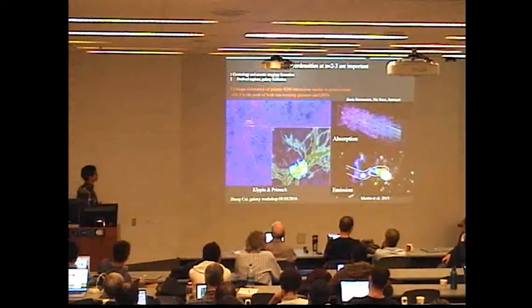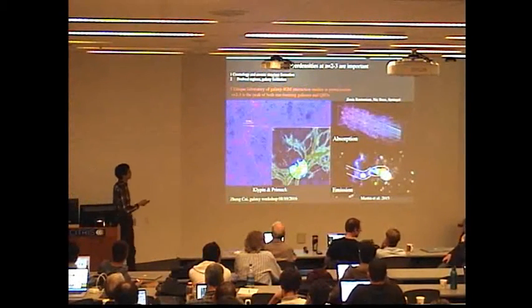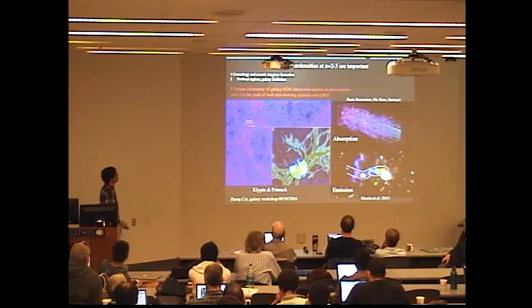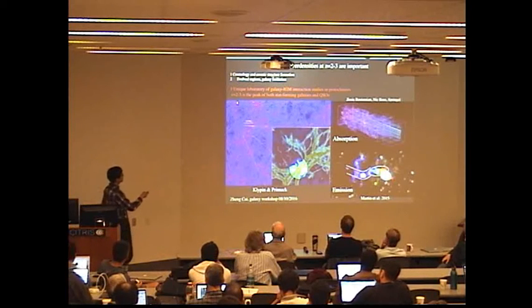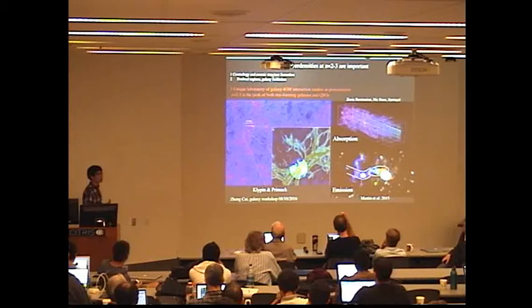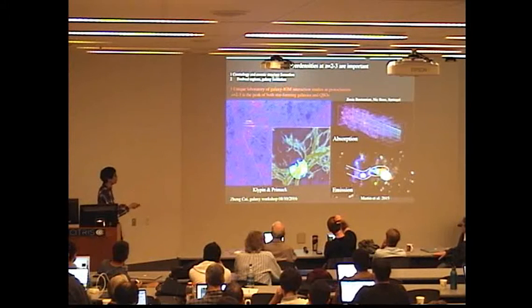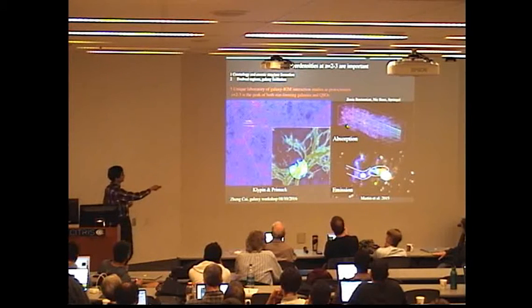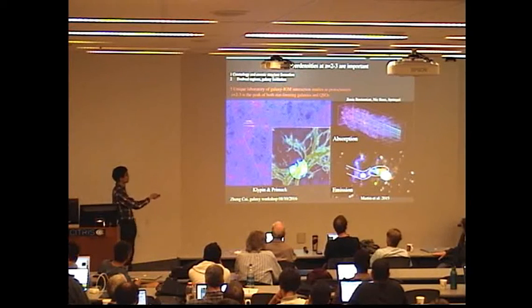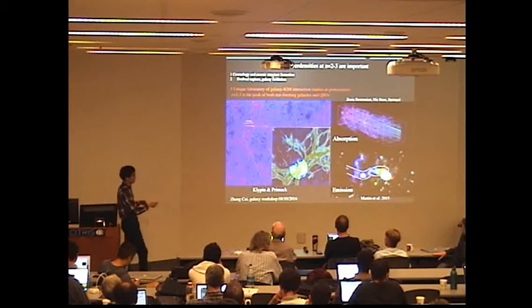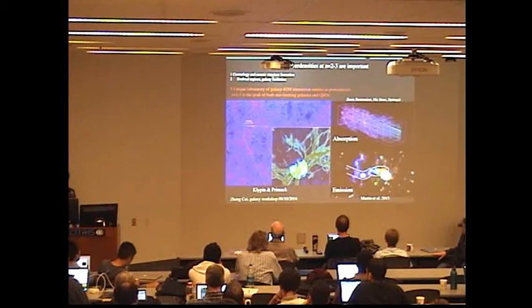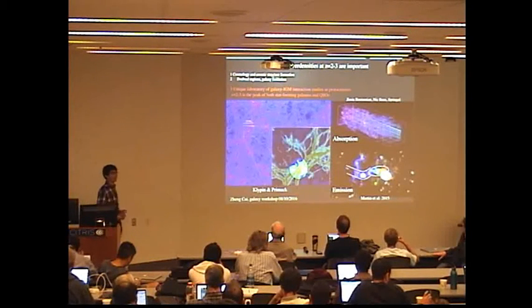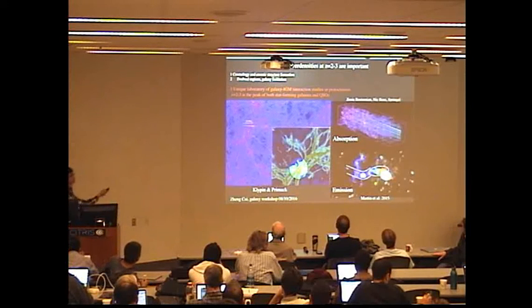The third motivation is the z of 2 to 3 is a unique laboratory to study the galaxy intergalactic medium interaction. Because z of 2 to 3 is the peak of both star-forming galaxy and the quasars, at 2 to 3 we can have a very good sampling of the intergalactic medium through the absorption like tomography or the emission. So those are all the key questions that drive us to search for the highly matter over-densities at z of 2 to 3.